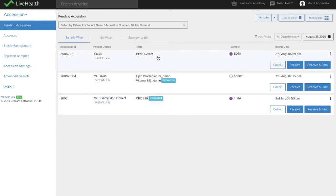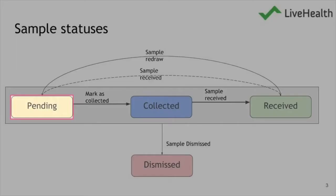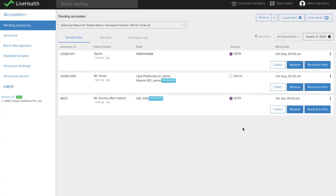The phlebotomist can see in Pending Accession the samples which need to be collected. These samples which are in pending status are the ones which have not yet been collected.